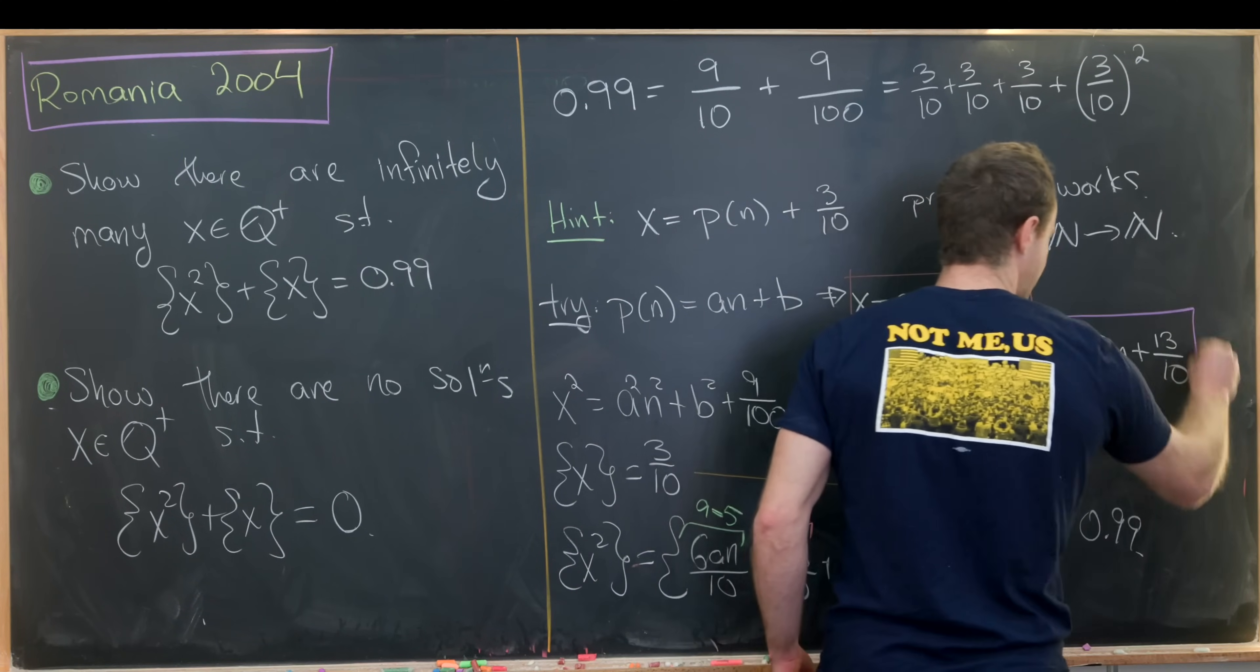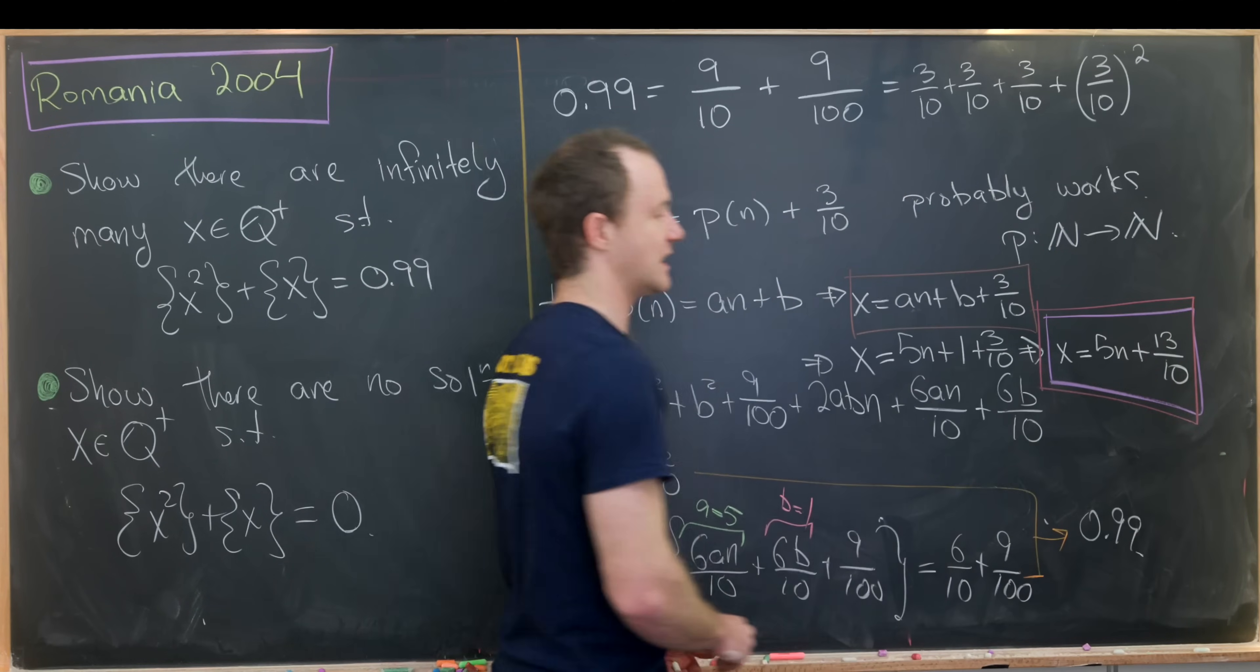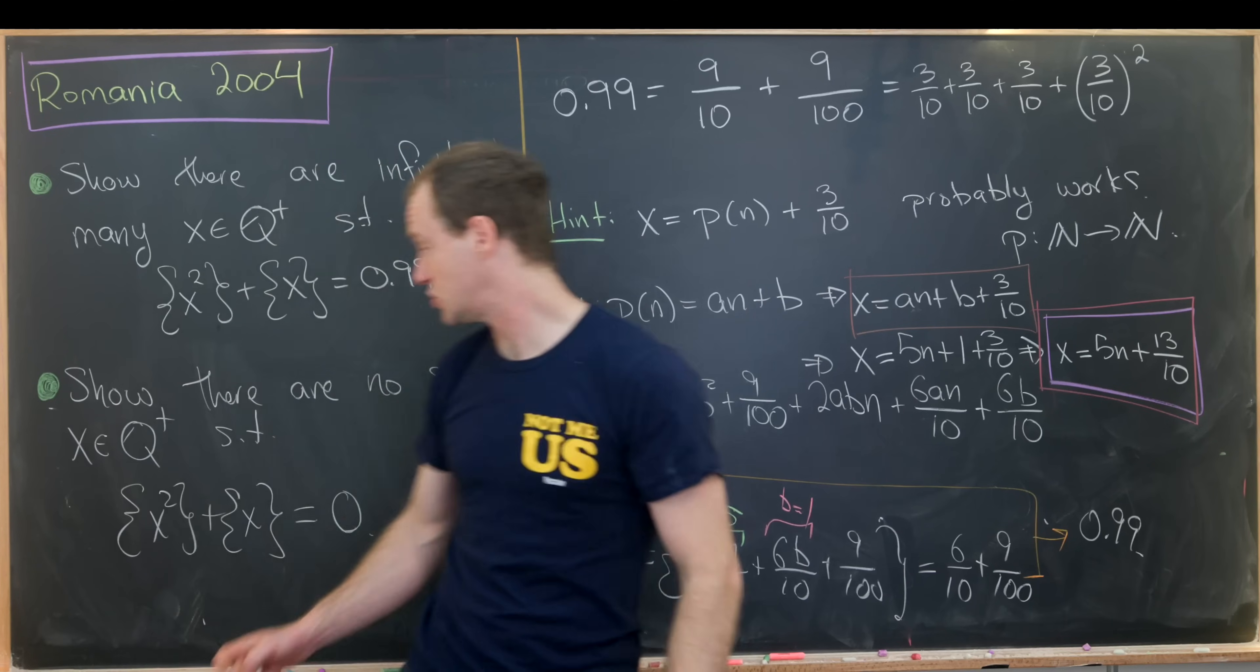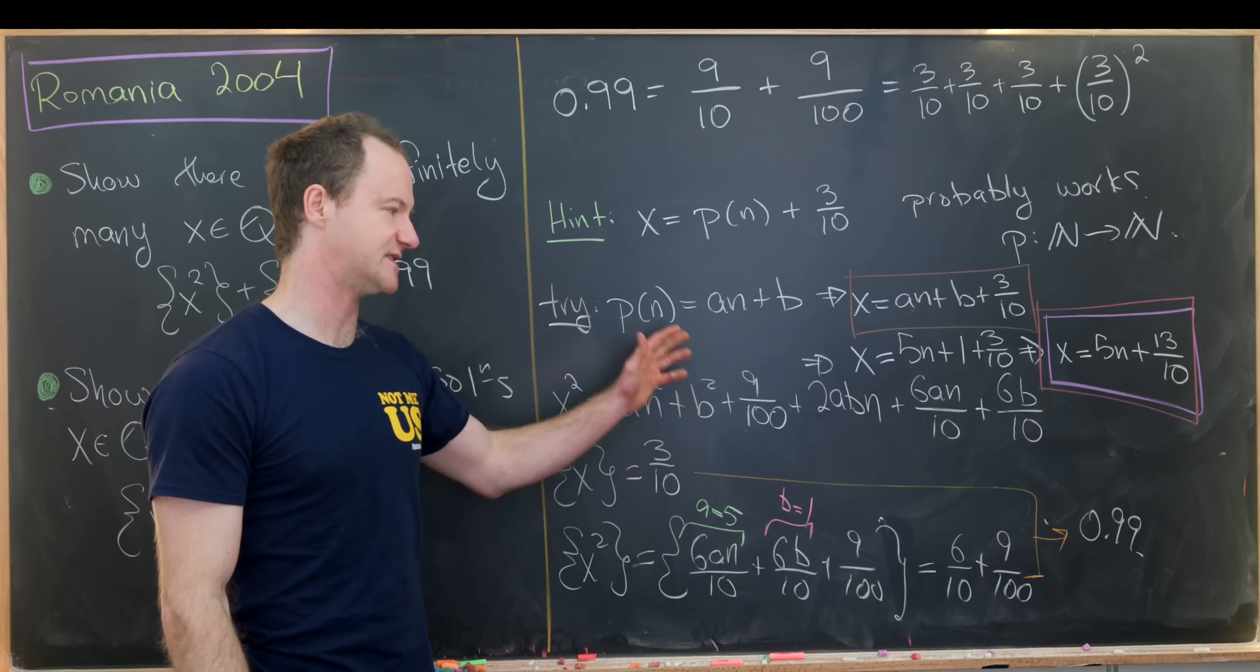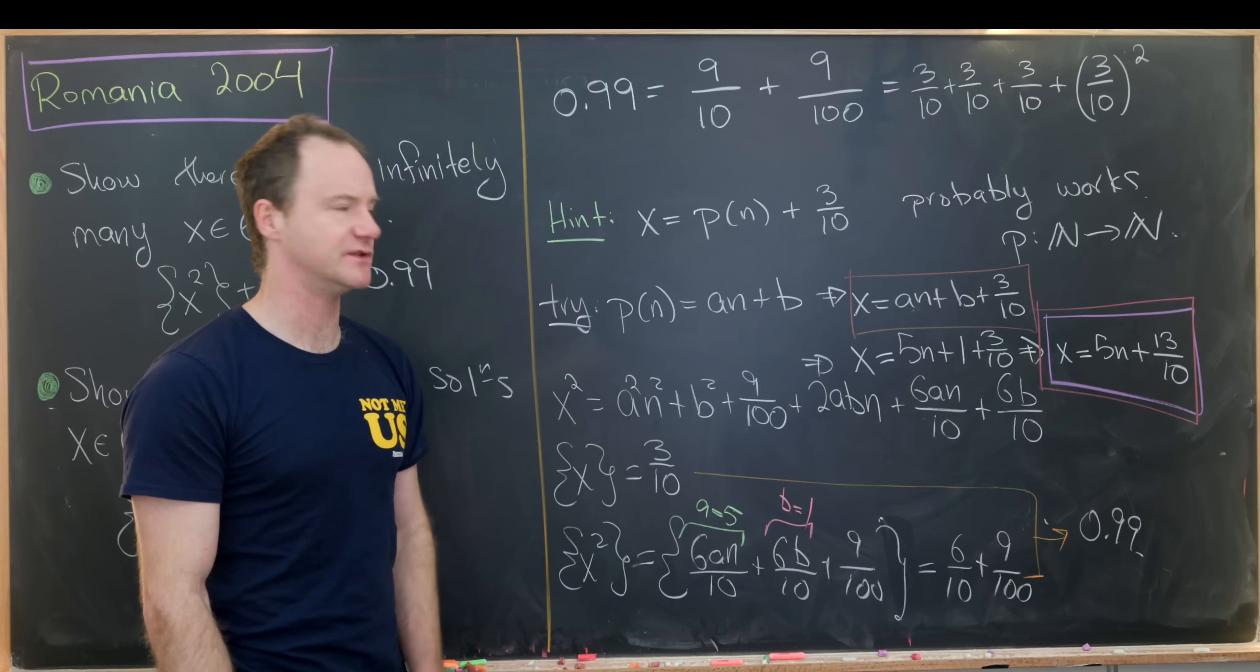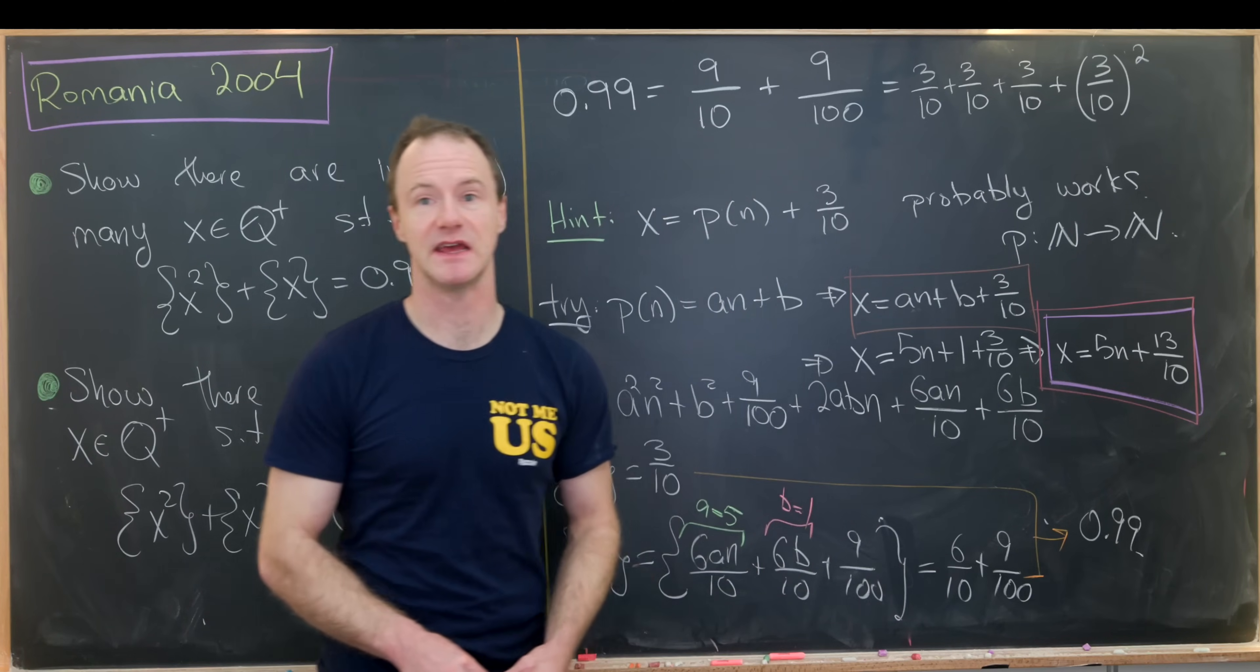So that's the form of x which will give us a solution regardless of the natural number n. In other words, this is our infinite family of solutions to this equation right here. You could check these, but checking these will just be going through the same calculation without the free a and b. I'll let you guys do that if you want to. Now let's show that there are no solutions in this related case.